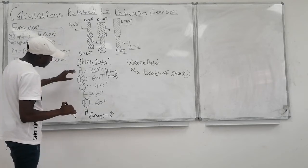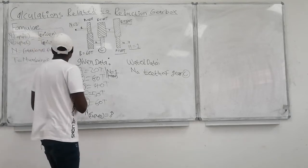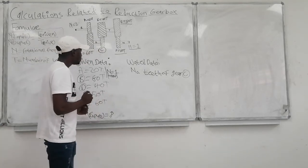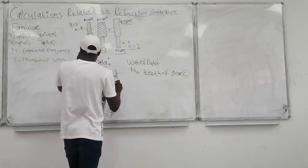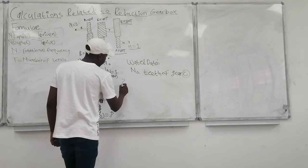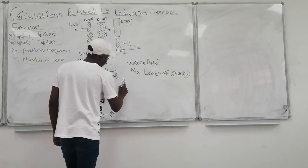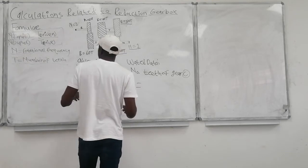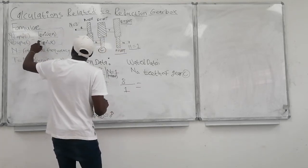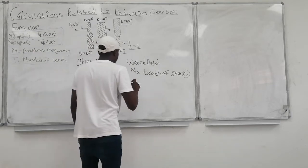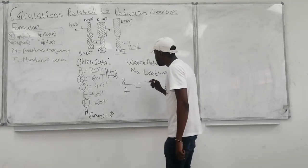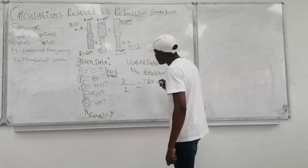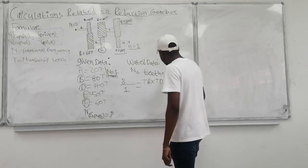Now we can arrange our data according to the formula. We take the input divided by the output: 8 divided by 1. This equals the product of the driven gears over the drive gears — that is T_B multiplied by T_D multiplied by T_F in the numerator.